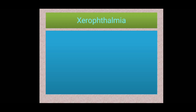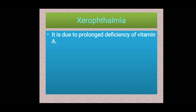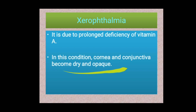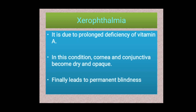The next disease is xerophthalmia. It is due to prolonged deficiency of vitamin A. If the vitamin A deficiency continues for a long period, it may result in a dangerous condition: the cornea and conjunctiva become dry and opaque. These structures should always be kept moist and wet. This lack of vitamin A leads to permanent blindness, for which there is no treatment once the cornea and conjunctiva become dry.